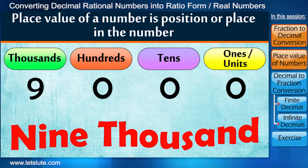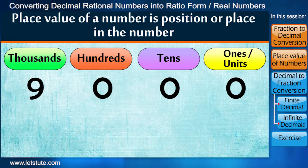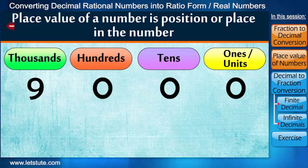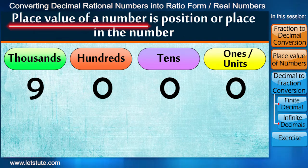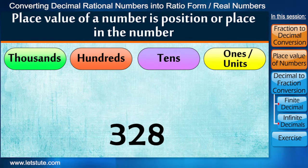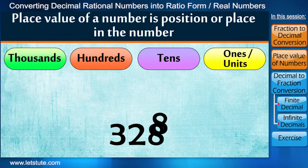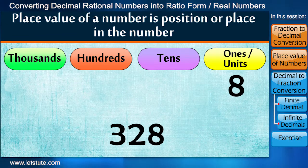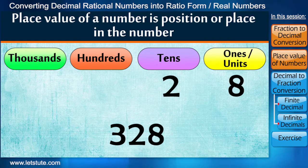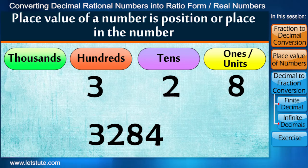So let's first learn a few basic things about place value of a number. In number 328, 8 represents the unit or ones place, 2 is tens, and 3 is hundreds place. Now if we increase one digit, then number 3 shifted to the thousands place, 2 is hundreds, and so on.